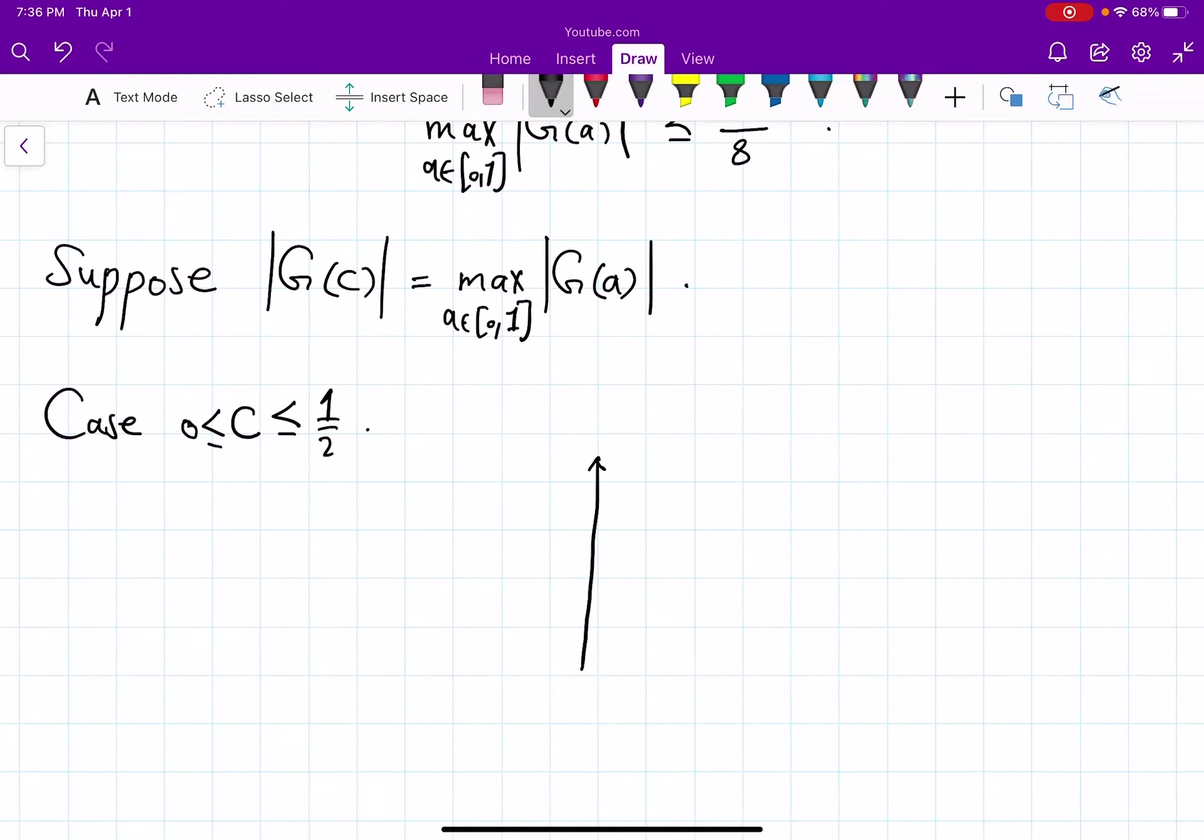Let's draw some pictures. So here is 1, here is 1 half. And you know that at some c here your g(a) reaches a maximum. What else do we know? We know that the function f begins at 0